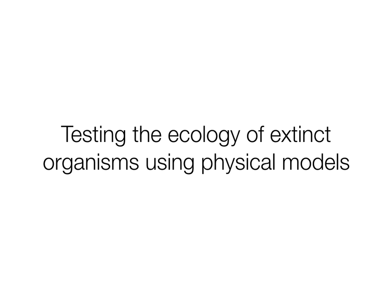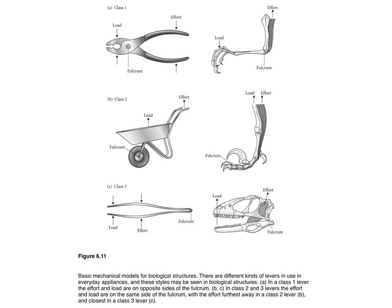When it's maybe less obvious what the function of a trait is, we can test the ecology of extinct organisms using physical models. The book has a diagram that shows how we can compare things like different parts of a joint or a skull to things we're familiar with, like fulcrums on a pair of pliers, wheelbarrows, or a pair of tweezers. We can use our understanding of physics and mechanics to understand how organisms function.